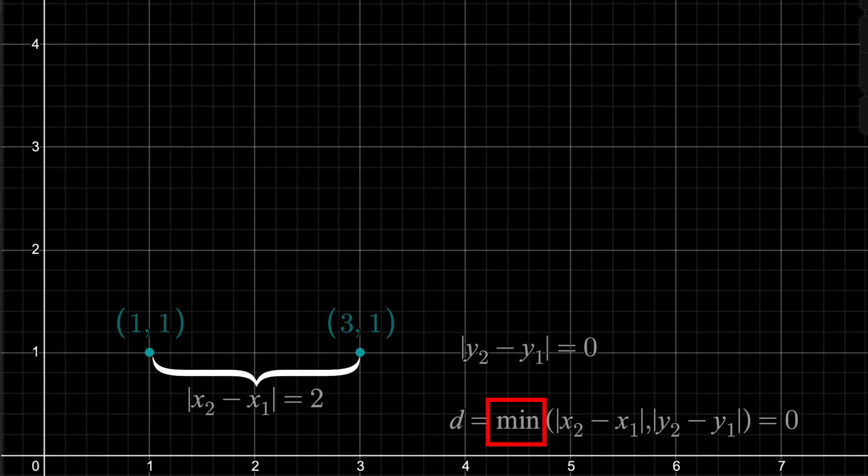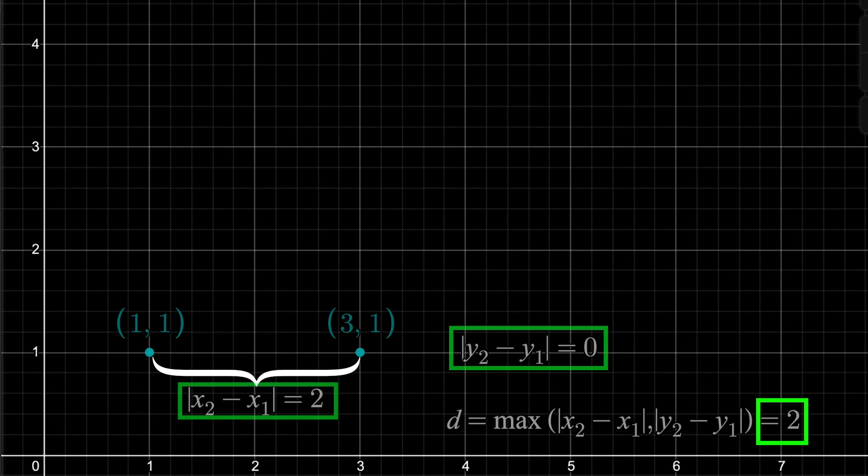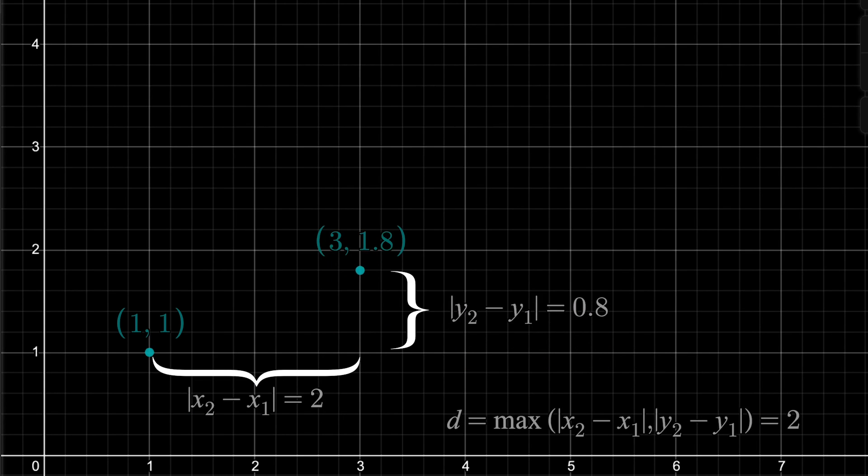But if we switch min to max, then this is a metric. I won't go through the requirements this time, they're all met. But the distance now, for example, is 2, the max of those differences. And that stays true as we move up, until we pass (3, 3), then the distance follows the difference in y values.